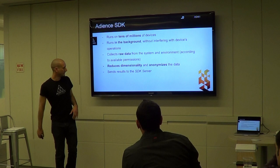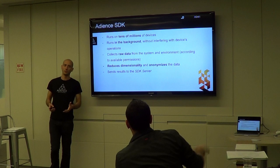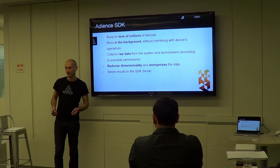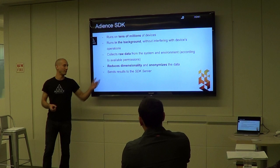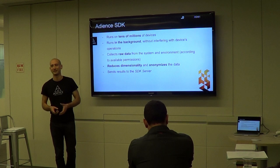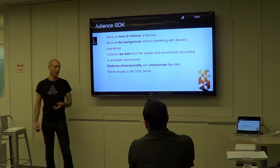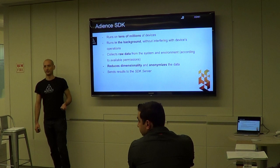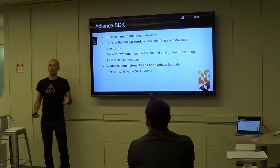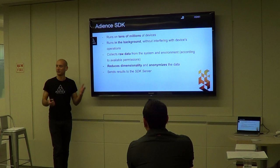We then reduce dimensionality and anonymize the data. That means we don't want any PII - personally identifiable information - leaving the device. We remove anything that could identify the user, and we also remove any part of the information that isn't essential to us, making the data a lot smaller. We then collect all the data and send it back to our server called the SDK server.